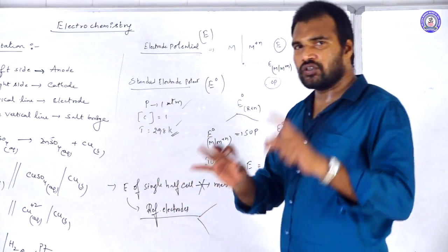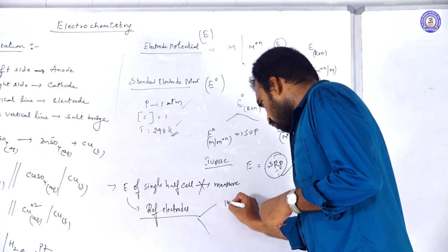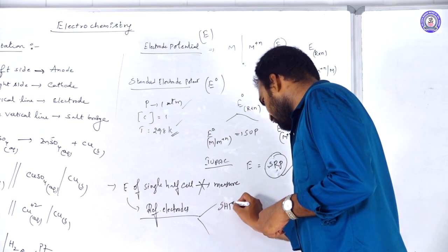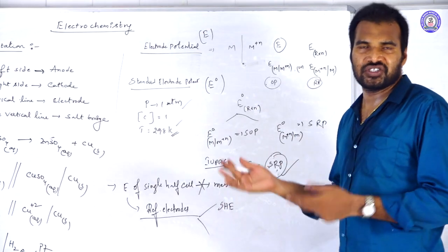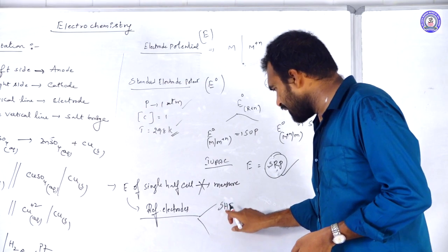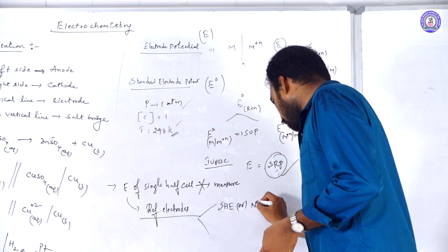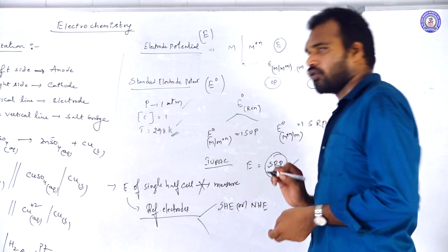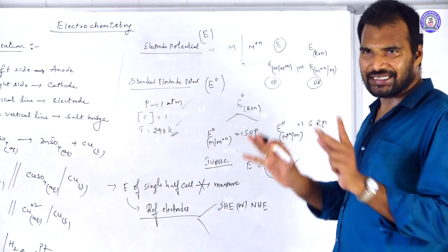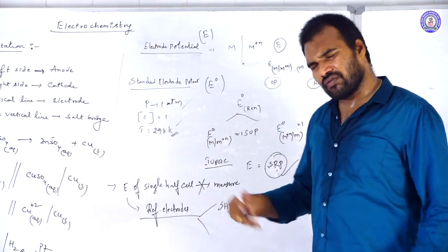Generally, we use two reference electrodes. One is the hydrogen electrode, called S-H-E, which stands for Standard Hydrogen Electrode — also called Normal Hydrogen Electrode (NHE). The other is the calomel electrode.